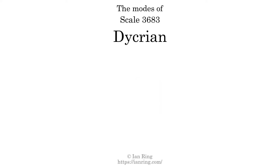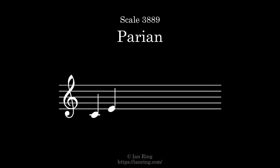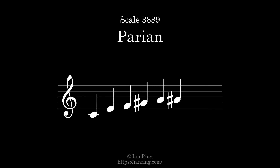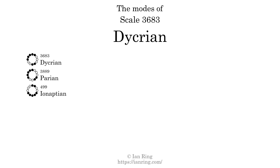This scale has 7 modes. The first mode is itself. The second mode is scale 3889, also known as Parian. It sounds like this. The third mode is scale 2297, also known as Parian. It sounds like this.